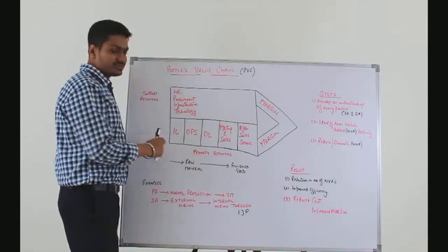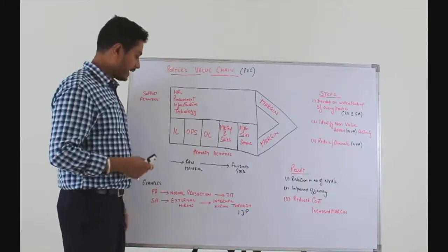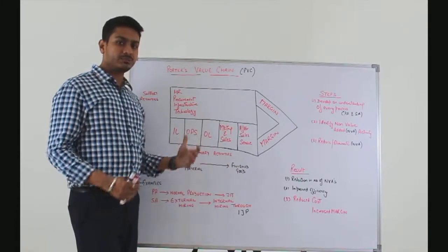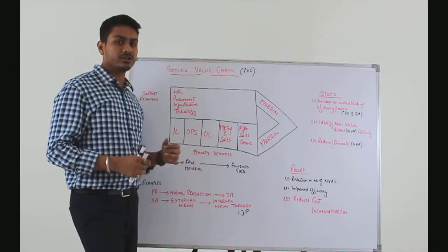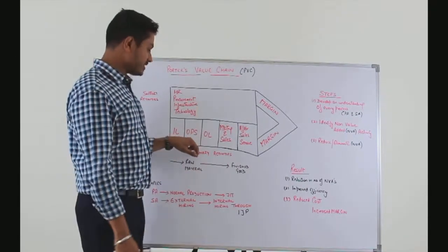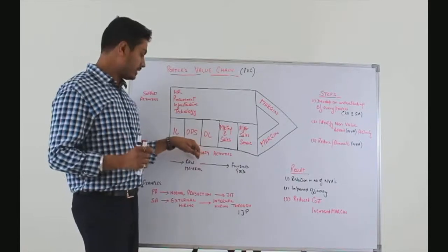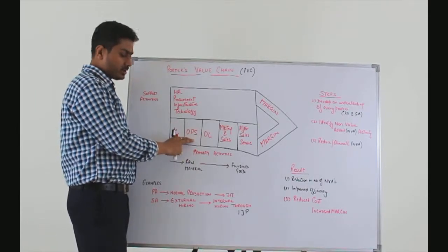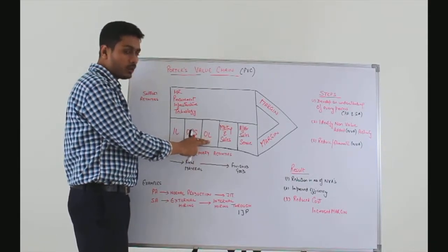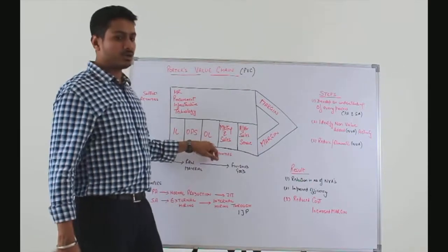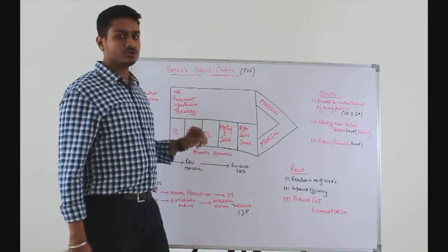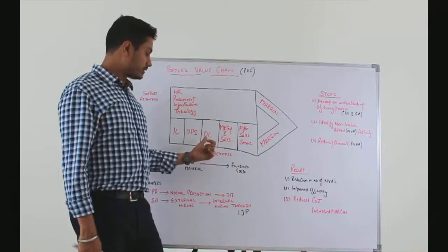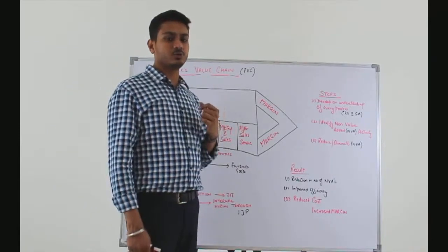Inbound logistics is the stage wherein raw material from the supplier enters the premises of the company — that is where the goods enter. Operations is when I pick up the raw material and start manufacturing or converting them into the finished product. Through outbound logistics, they are shipped or transited to the source of sales — it could be a wholesaler, the customer, or a retailer through which goods will then be sold to the customer.